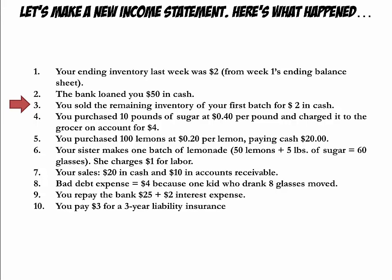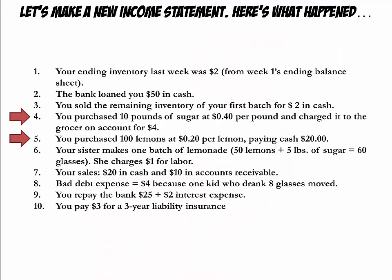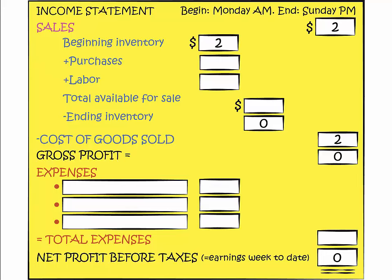The next item is the sale of your old inventory for $2, which also cost $2 to make. We will put $2 in sales to reflect selling that lemonade. Your gross profit for Week 2 is zero so far because you sold the inventory at a price that only covered the cost of goods sold. You then bought 10 pounds of sugar for $4 on account and 100 lemons for $20 in cash. The purchase of sugar and lemons should all go under purchases — whether or not you paid in cash does not matter for the income statement. What matters is that you acquired the lemons and the sugar; when you actually paid for them is irrelevant.